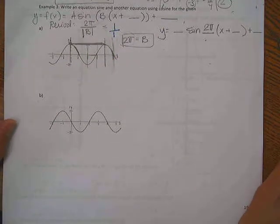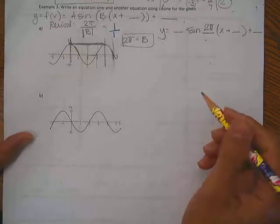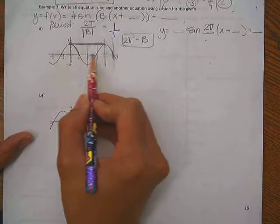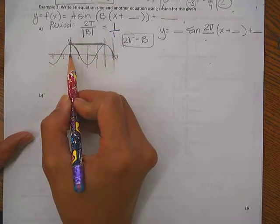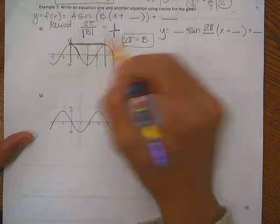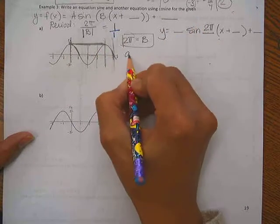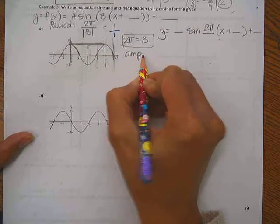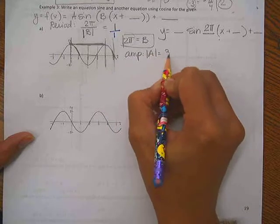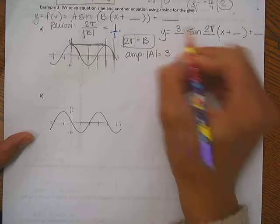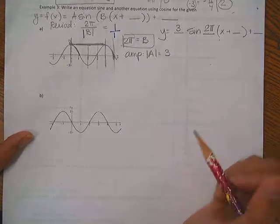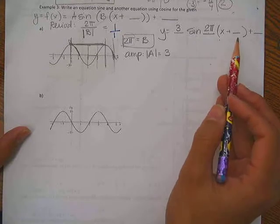Then the next piece is going to be your amplitude, which is a vertical distance, the average, or the distance from the center. So here's the center. Looks like I'm going up 3 units and down 3 units. So we're going to put in a, absolute value of a, which is your amplitude, equals absolute value of a, which in this case is going to be 3. So a is going to be positive or negative. We're going to determine that in just a second. So we have two blank spaces filled in.